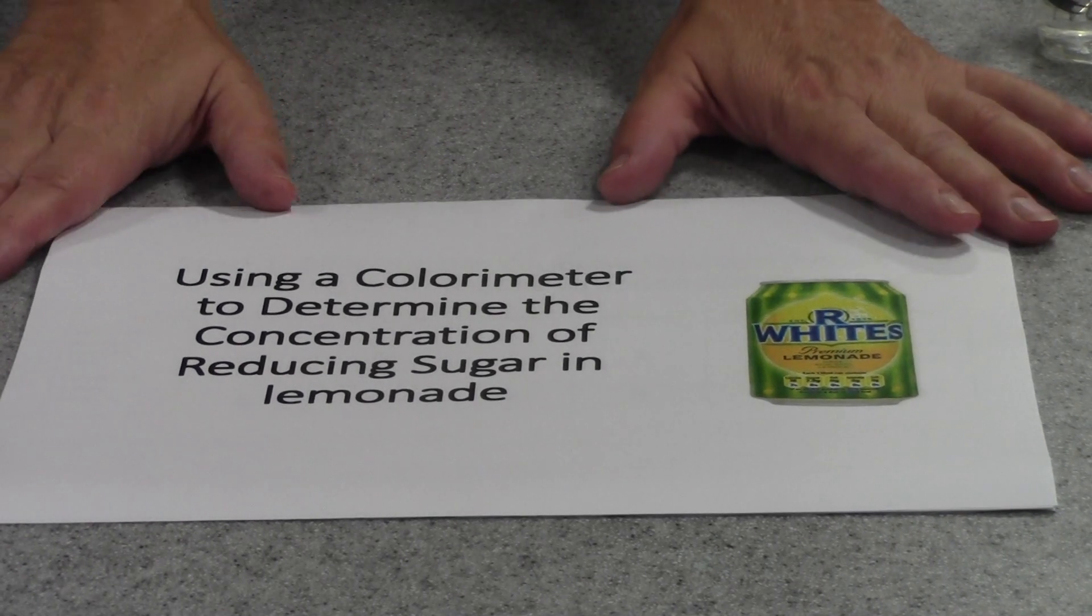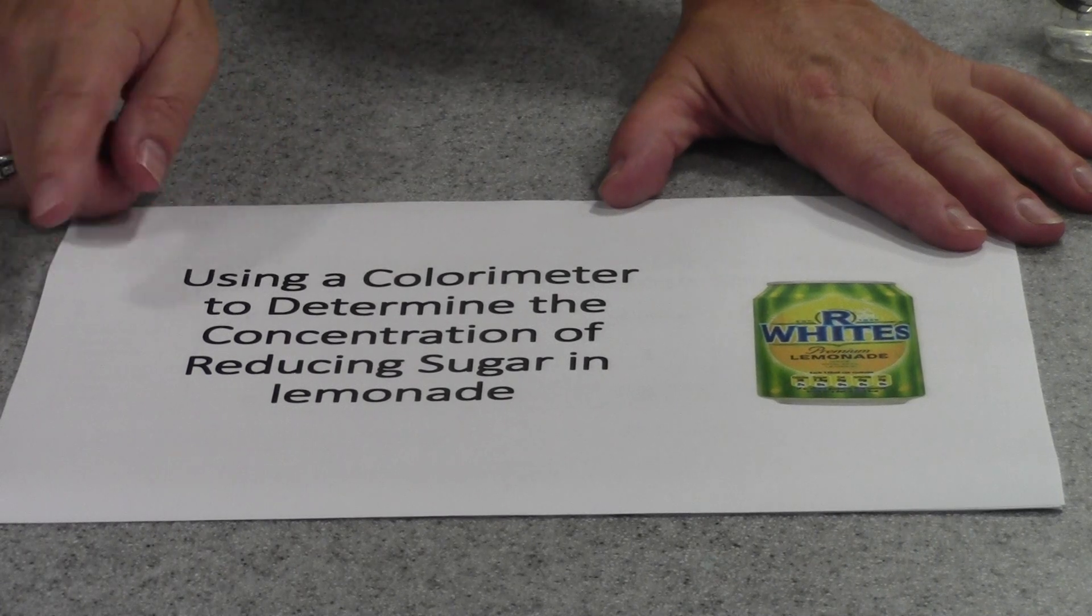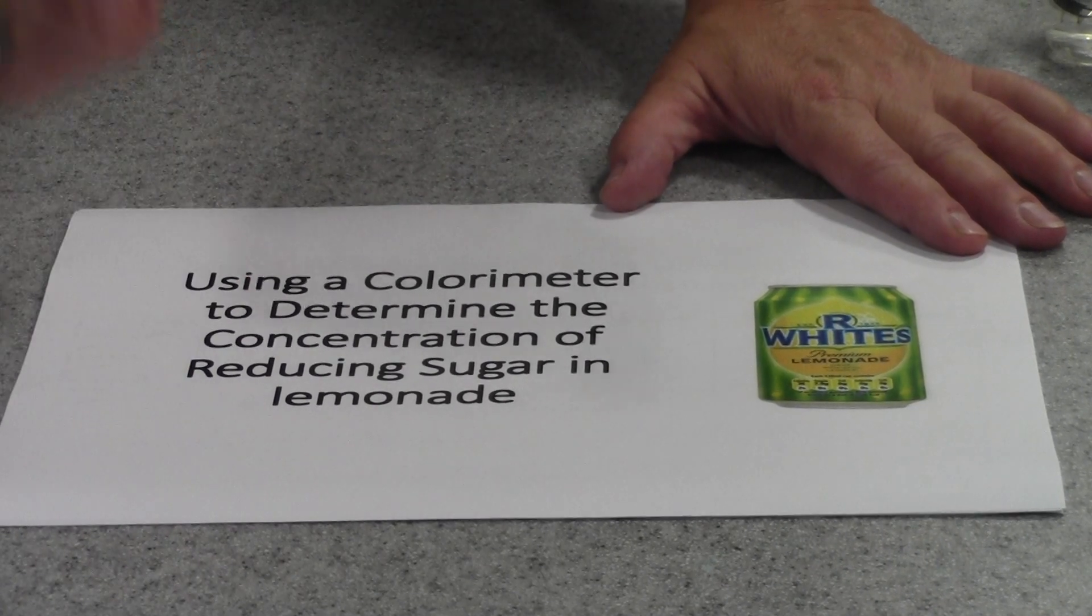I'm going to show you a method that involves using a device called a colorimeter to determine the concentration of reducing sugar in lemonade.